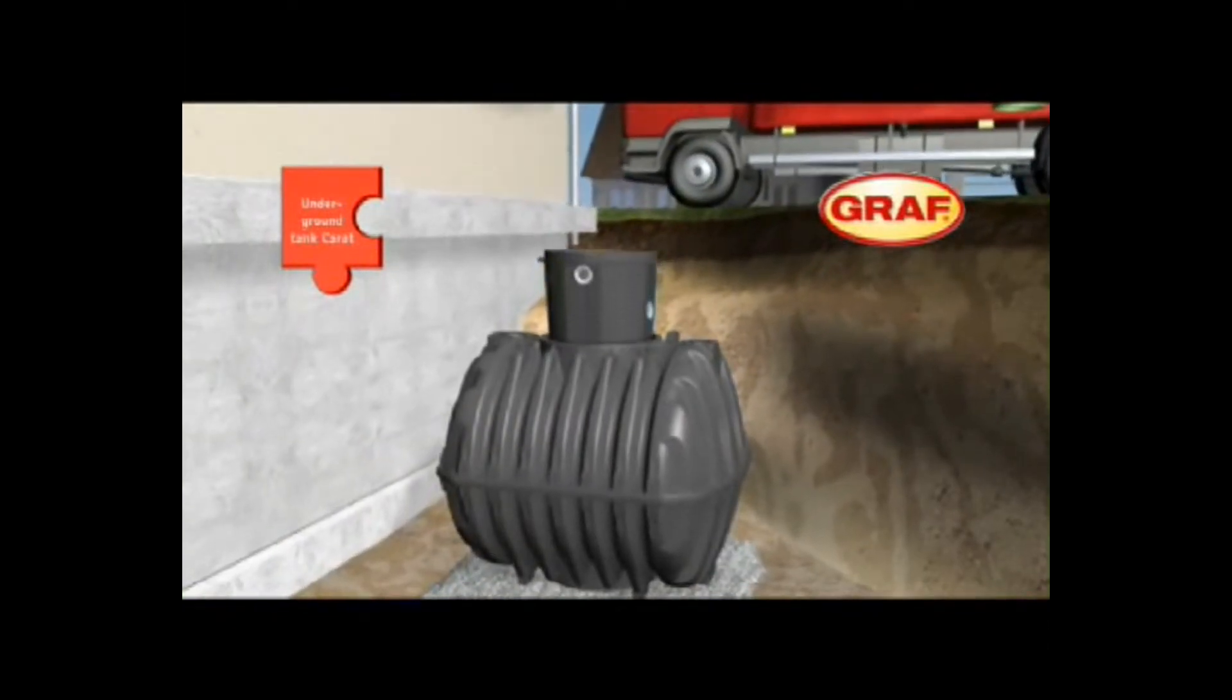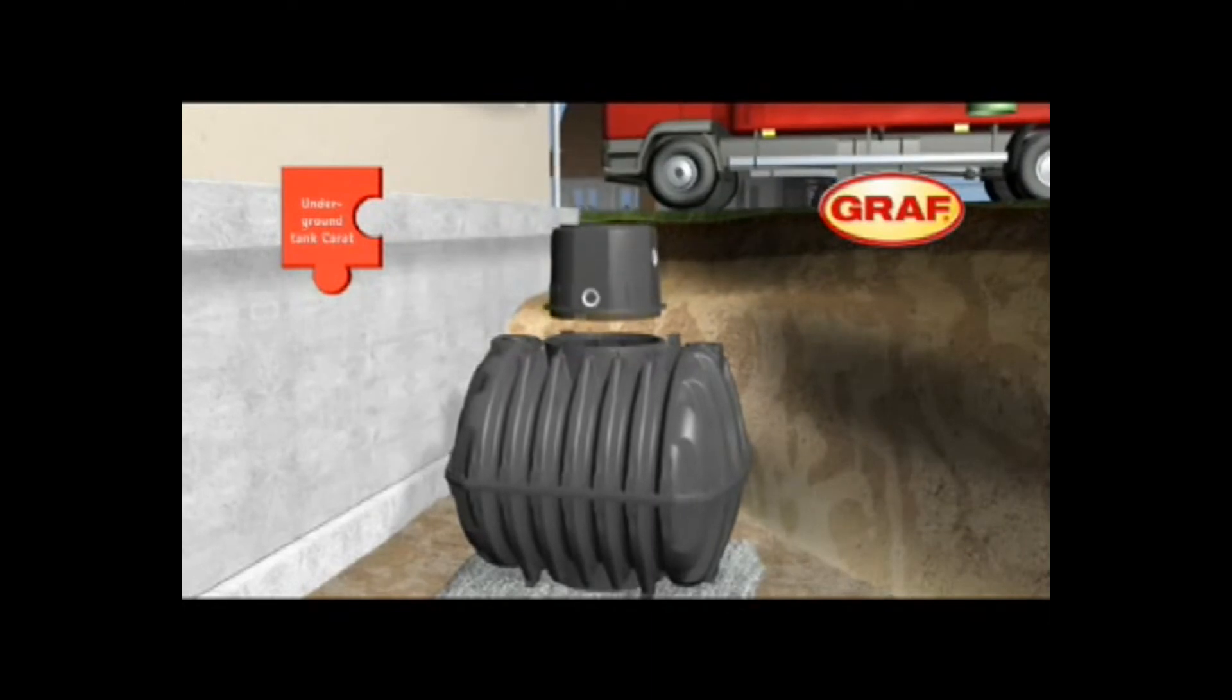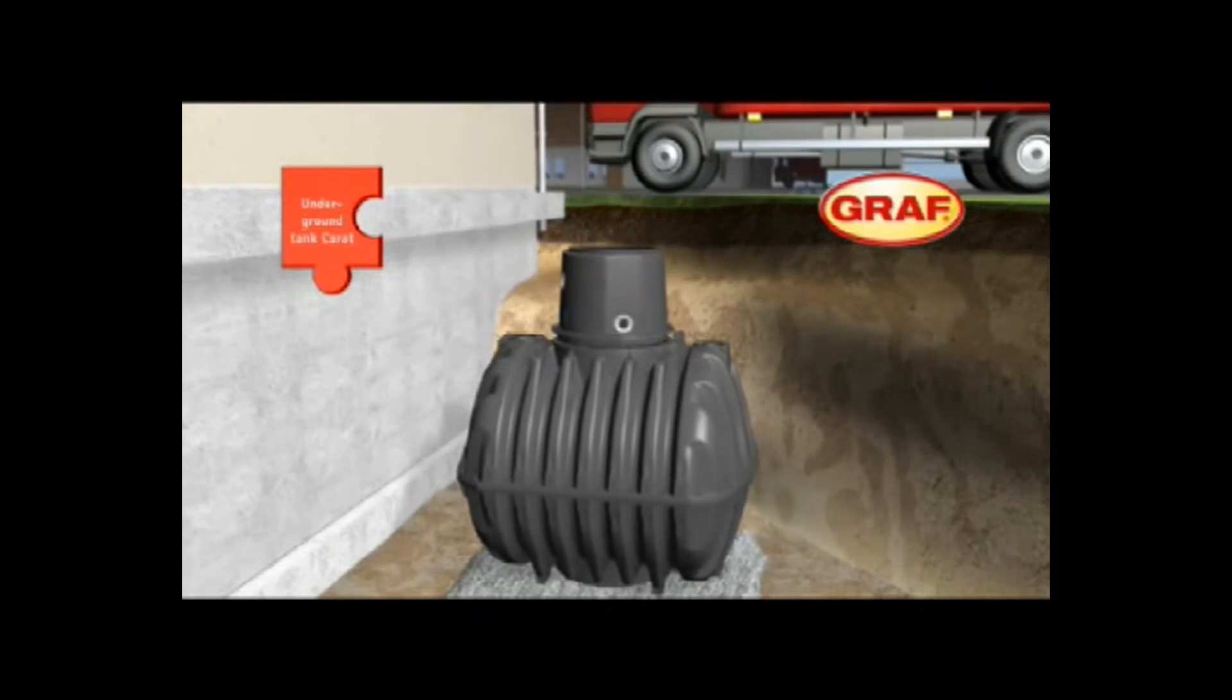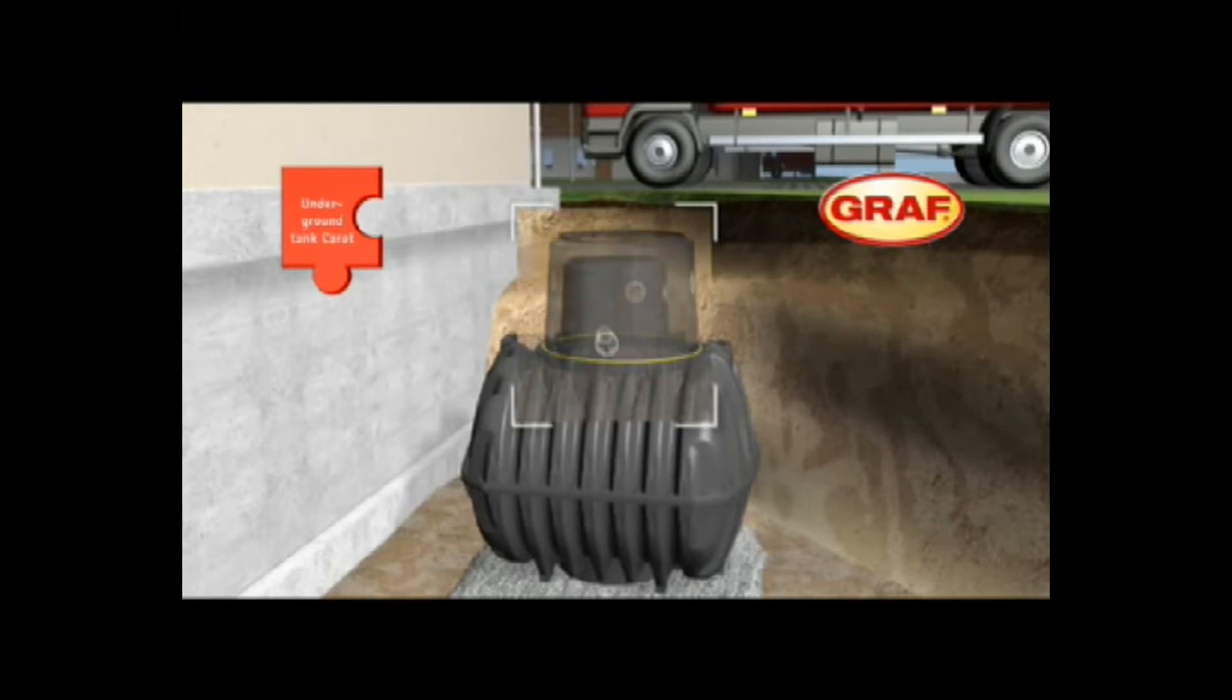The tank turret is used to connect all the necessary pipes. It can be easily attached to the top of the tank. The tank turret can be turned freely to enable alignment with the connecting pipes. The turret's rubber seal prevents contamination from percolated water.